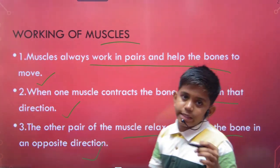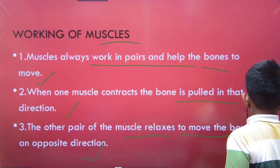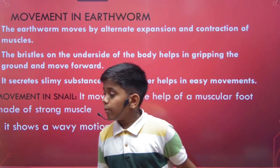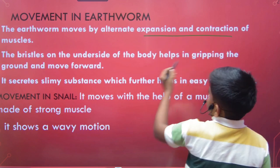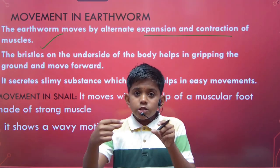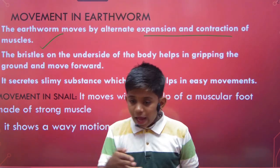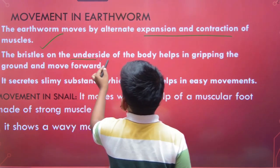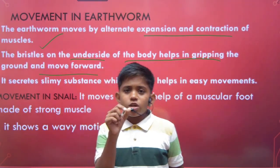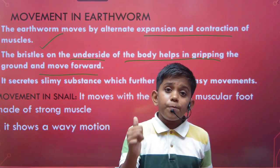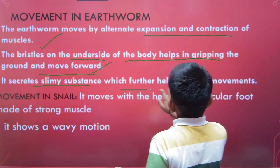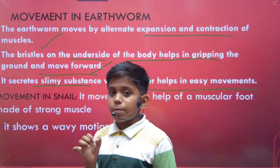Next, movement in earthworm: the earthworm moves by alternate expansion and contraction of muscles — muscles contract and extend alternately and the earthworm moves. The bristles on the underside of the body help in gripping the ground and moving forward. The earthworm also secretes a slimy substance which further helps in easy movement.